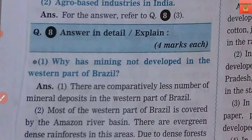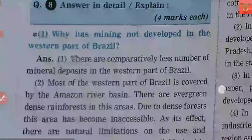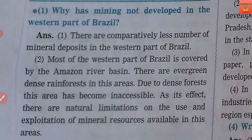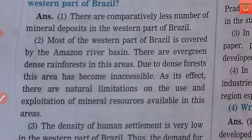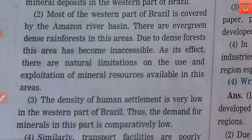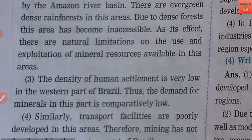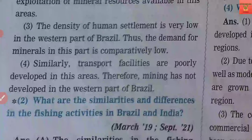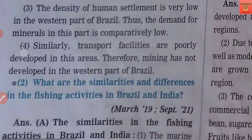Now we will see brief question answers, which usually come for four marks in exams. Why is mining not developed in the western part of Brazil? The reason is that mineral deposits are less in the western part. Most of Brazil's western part is covered by the Amazon River Basin, where there is dense evergreen rainforest. Due to dense forest, the area becomes quite inaccessible — there are no transport facilities like roads or railway lines — and natural limitations make land use very difficult. Resources there are hard to utilize, and human settlement in the western part of Brazil is very limited, so mineral demand is also quite low.